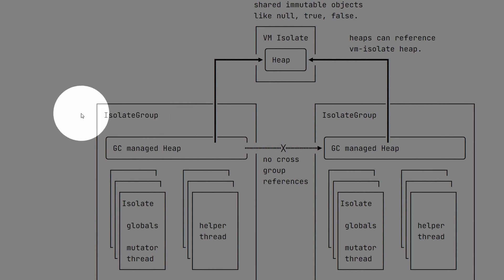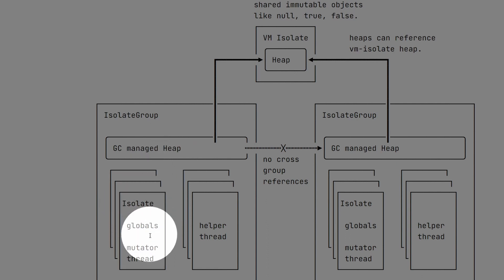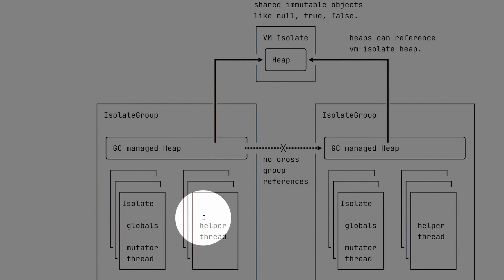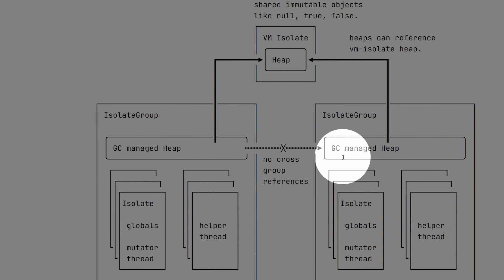Over here we have an isolate group. Within this isolate group, we have a garbage collector managed heap, and we also have some isolates. An isolate can have an associated mutator thread with it, and also some globals. Within the isolate group, there is also a bunch of helper threads. Then you can have another isolate group over here. The important thing is that the two groups cannot directly communicate — we do not share memory between the two groups.